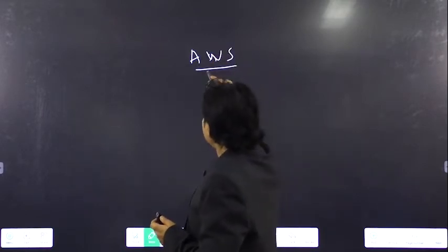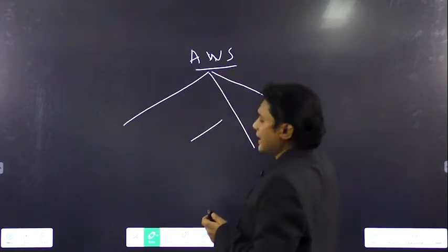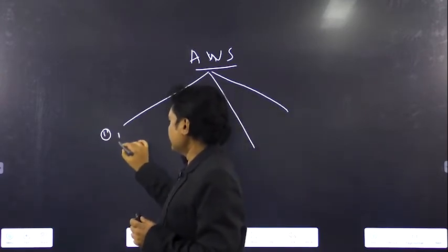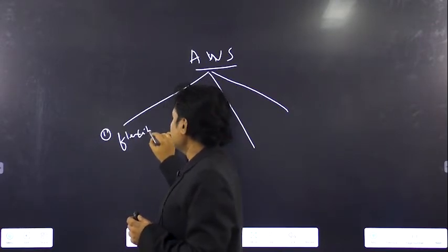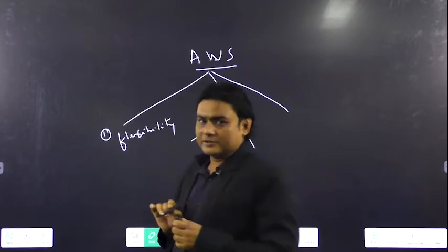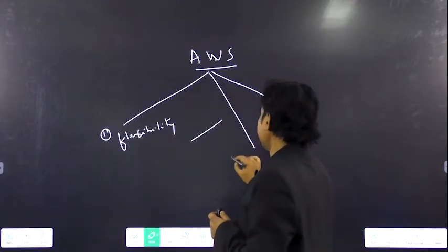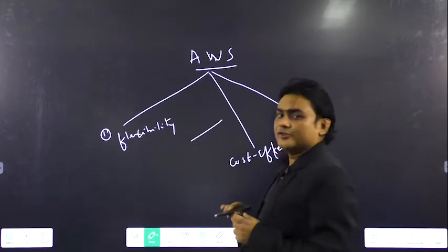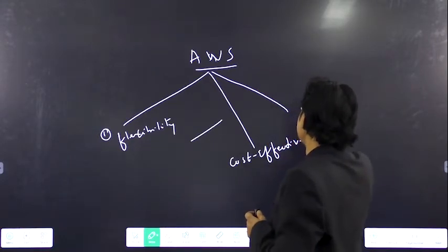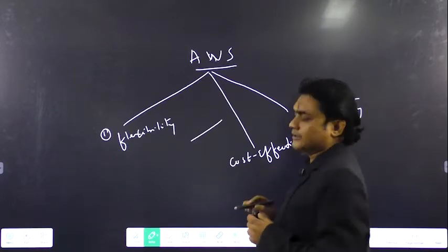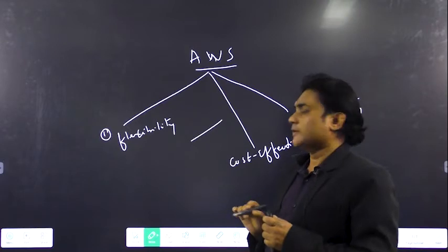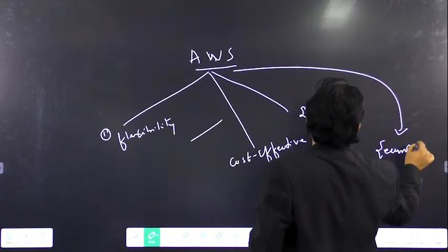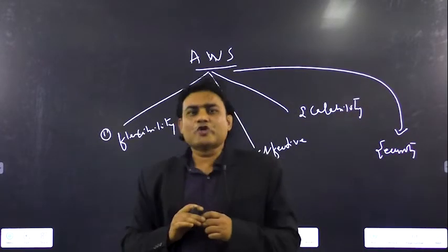Why do we require Amazon Web Services? Because Amazon Web Services has many features. The first feature is flexibility. It also has the feature of cost effectiveness. Then it has the feature of scalability. And one of the most important features of Amazon Web Services is security.